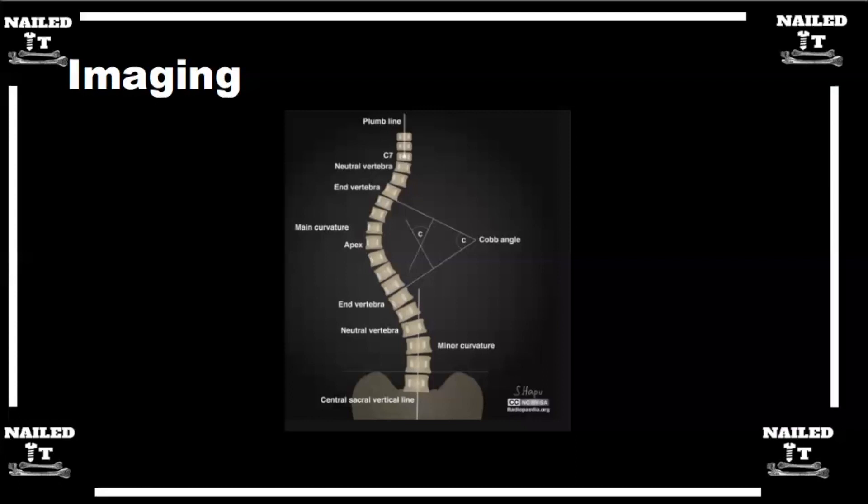Your neutral vertebra is the one that is neutrally rotated as far as the film is concerned. How do I know something is neutrally rotated? If you look at the screen here, you see that the pedicles look like eyes within the vertebra, and it's where those eyes look to be even on both sides, like even distance from the left and the right sides. You can see that neutral vertebra that's written here, you can see those pedicles have the same amount of space medial to the left and to the right from where the pedicles are.